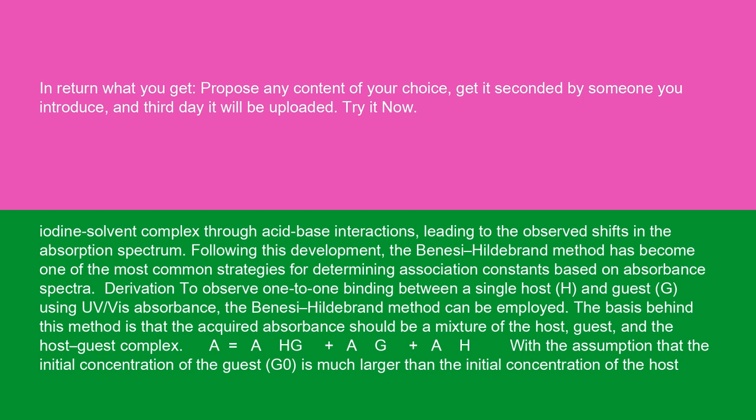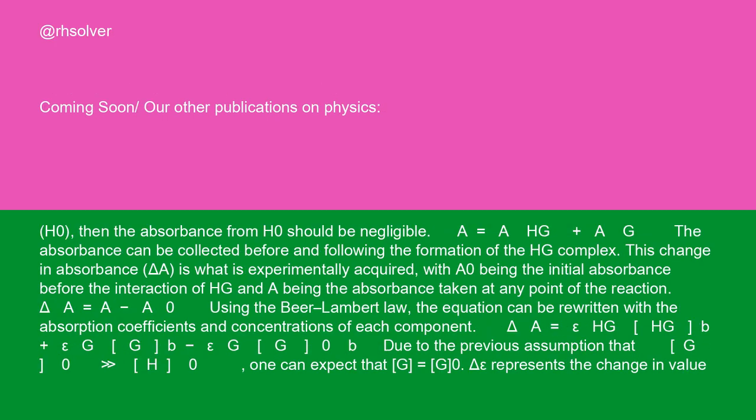The basis behind this method is that the acquired absorbance should be a mixture of the host, guest, and the host-guest complex. A equals AHG plus AG plus AH with the assumption that the initial concentration of the guest G0 is much larger than the initial concentration of the host H0. Then the absorbance from H0 should be negligible.